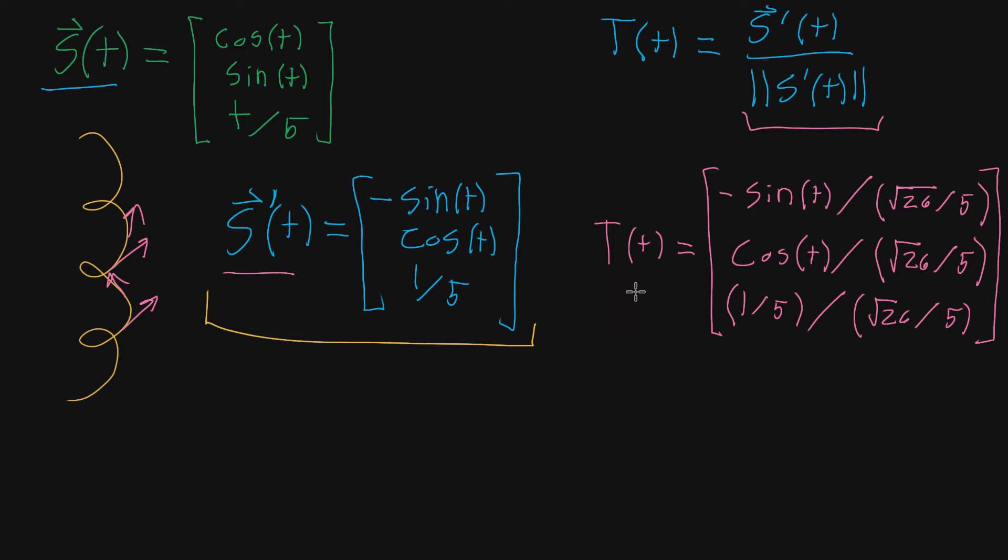And the part where we left off, we have this tangent vector function, this unit tangent vector function for our curve. So at every given value t, whatever point that corresponds to on the curve, this function is going to give us the vector that is of unit length and tangent to the curve. The ultimate goal for curvature is to find the derivative of that unit tangent vector with respect to arc length, and specifically we want its magnitude.